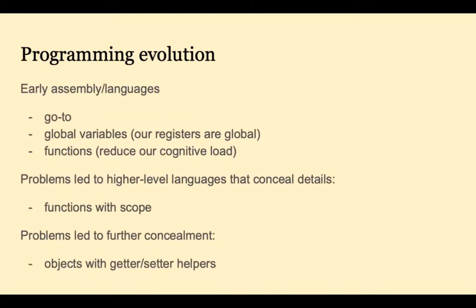Now that you've learned an assembly language, it's interesting to step back and think about how higher-level languages abstract away from assembly language. Early assembly languages and higher-level languages had things like go-to's, global variables, and functions. Some of these caused problems in large programs, leading to improvements in higher-level languages — basically concealing details, for example functions with scope. And there were still problems, so that led to further concealment with objects that have getter and setter helpers.